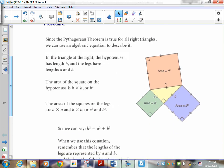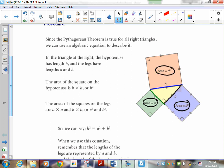Since the Pythagorean theorem is true for all right triangles, we can use an algebraic equation to describe it. Now if this length right here is h, and this one here is a, and this one here is b, then this square here, a squared and b squared have to add up to be h squared. And that is what we have as a formula.